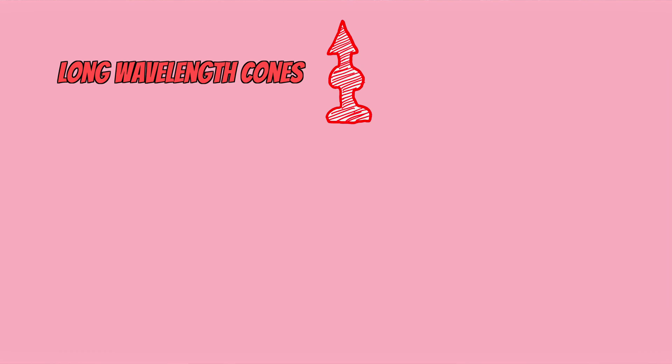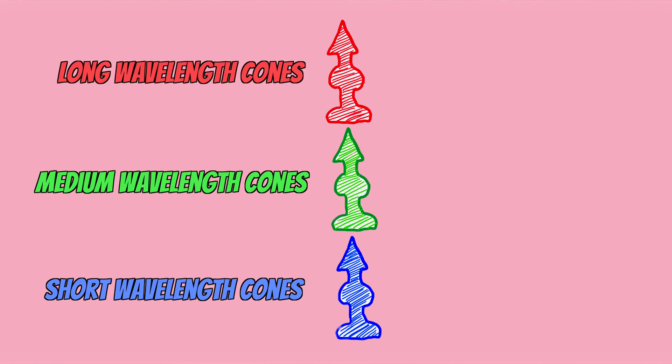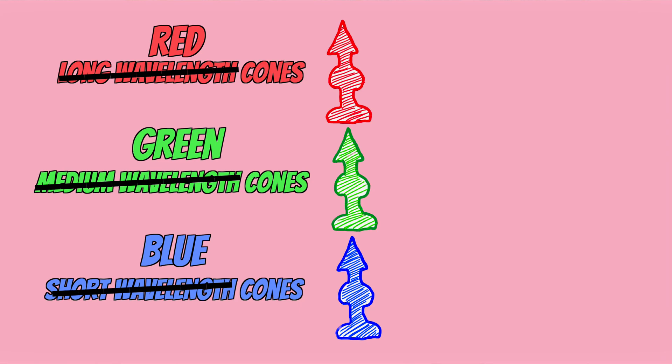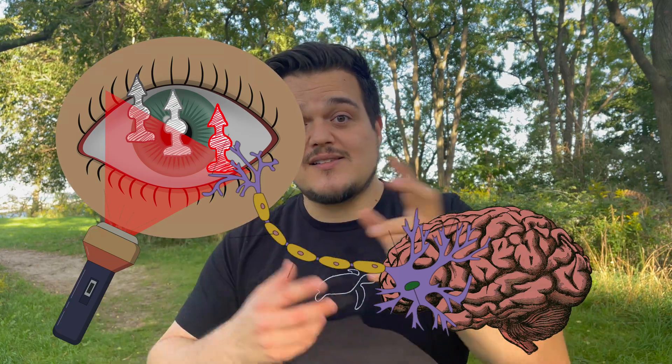Each of our cones is sensitive to a different wavelength of light. We have long wavelength cones, cones sensitive to medium wavelengths, and cones sensitive to short wavelengths. For simplicity we call these the red, green, and blue cones. When red light enters our eyes, our red cones get activated and send a signal to the brain saying, "I got a signal of 670 nanometer light," and the brain goes, "okay, that's red light."